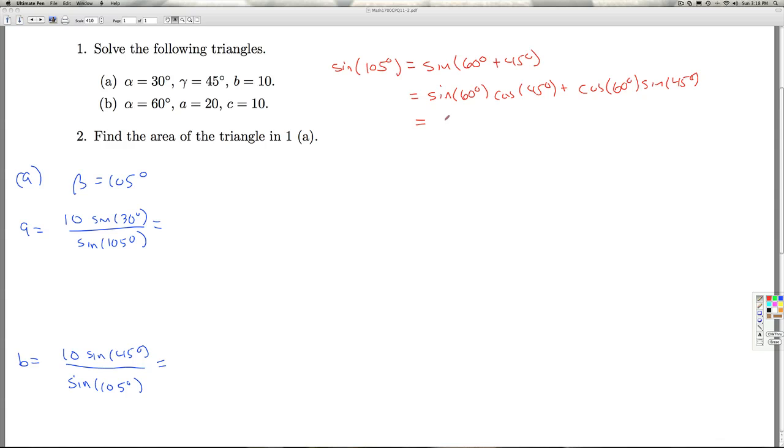We can simplify that. Square root of 3 over 2, times square root of 2 over 2, plus 1 half square root of 2 over 2. So I get square root of 6 plus square root of 2 over 4.